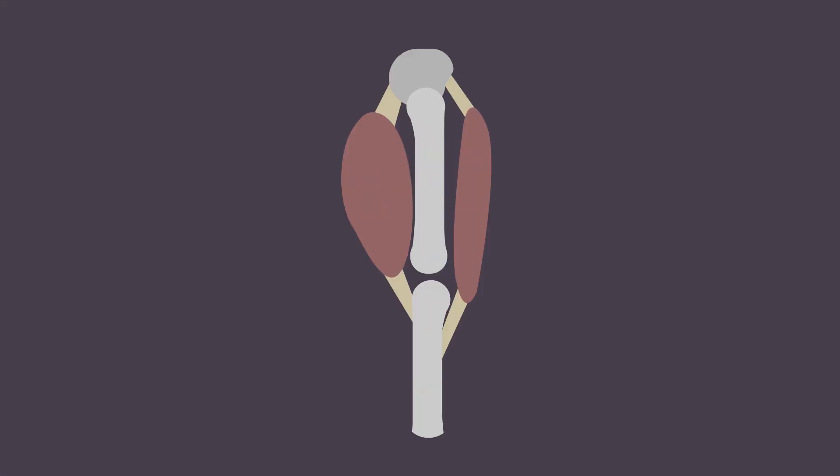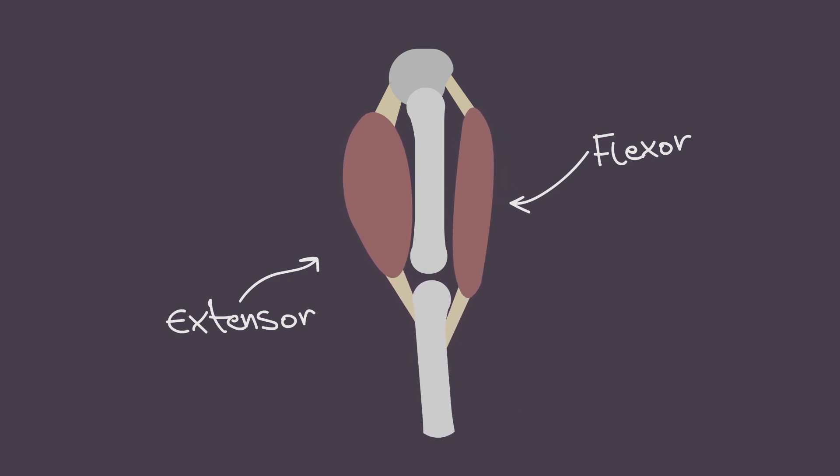Skeletal muscles, as their name suggests, are the ones that make your bones move. They come in pairs, one muscle to move the bone in one direction and another to move it back the other way.